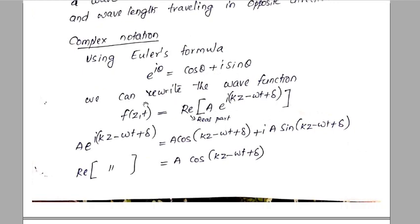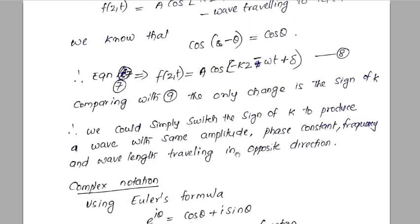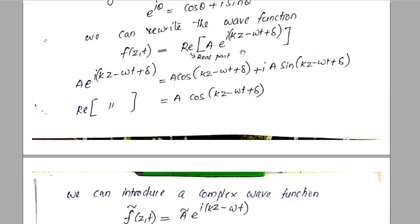The complex wave function A·e raised to i(kz minus omega·t plus delta) expands to A·cos(kz minus omega·t plus delta) plus i·A·sin(kz minus omega·t plus delta). The real part of this complex function gives exactly f of z, t — the actual cosine wave. So we can write f of z, t as the real part of this complex wave function.